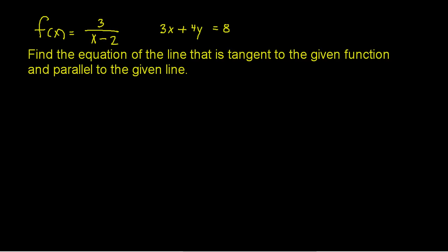Go ahead and pause if you want to try to find the derivative of this function on your own following the differentiation process — I encourage you. But I'm just going to tell you: the derivative of this problem is negative 3 over x minus 2 squared. This is a formula that can find the slope at any given point.